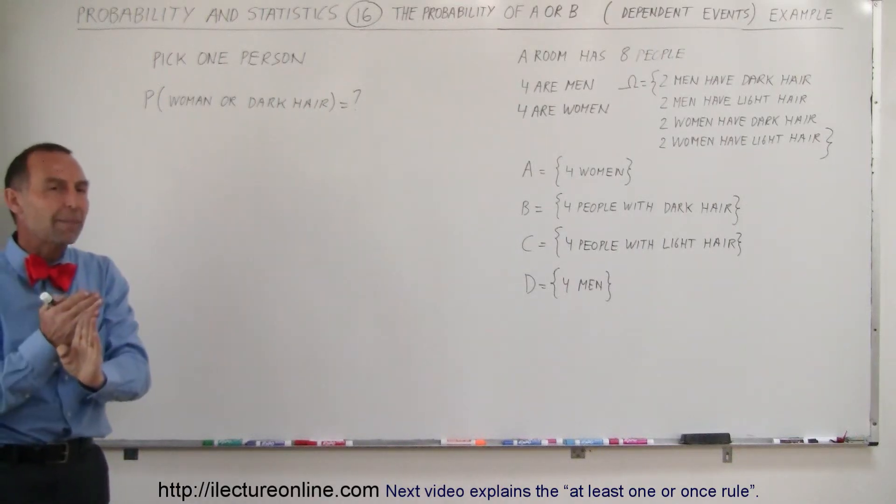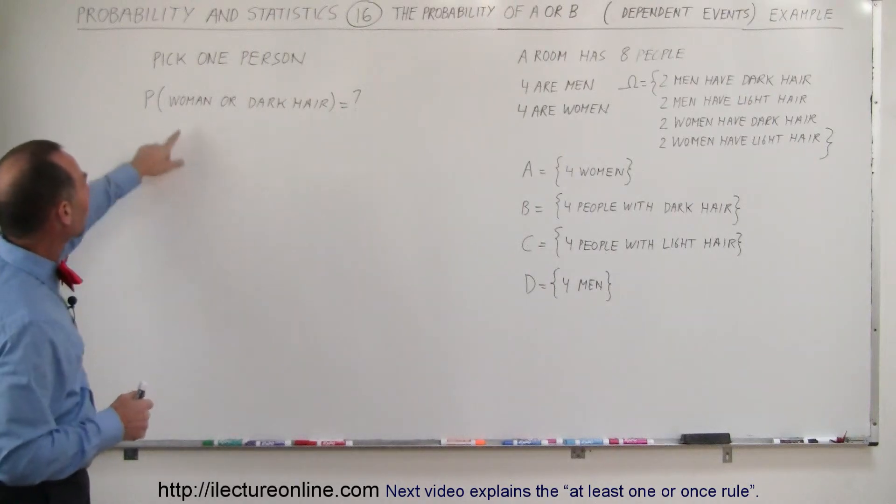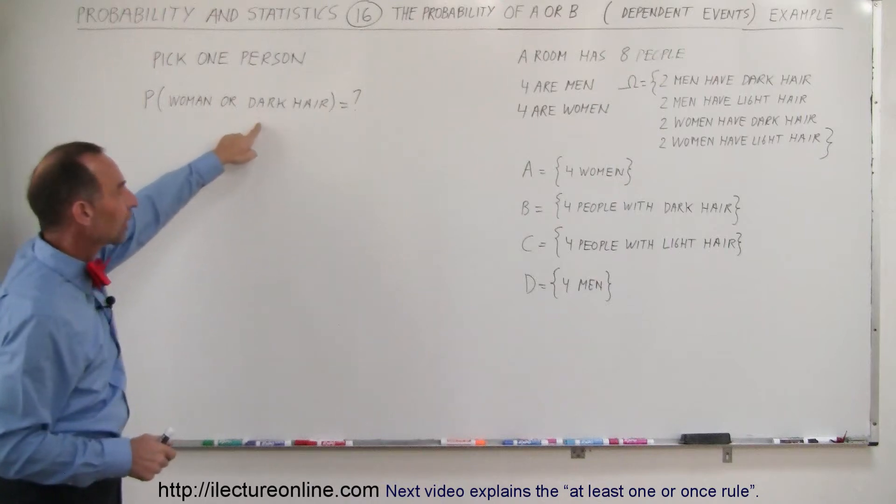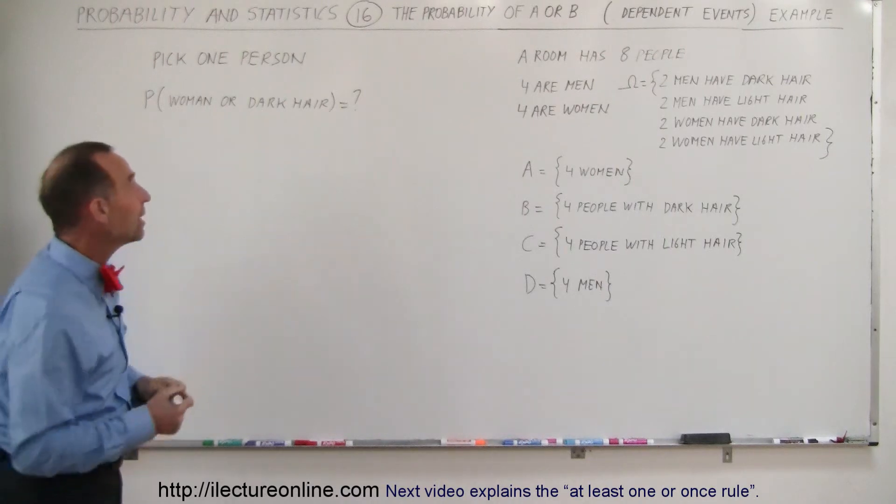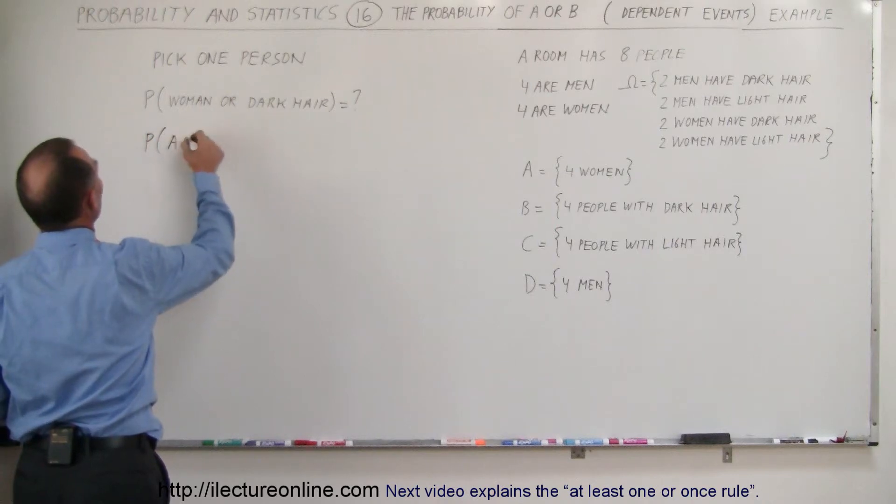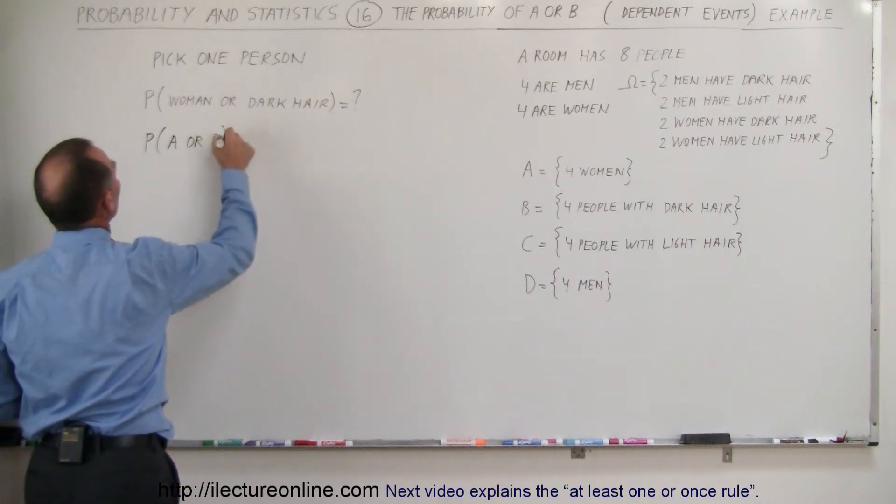Since there's an overlap here, the probability of women would be event A, and the probability of dark hair would be event B. So in this case we're looking for the probability that A or B will occur.